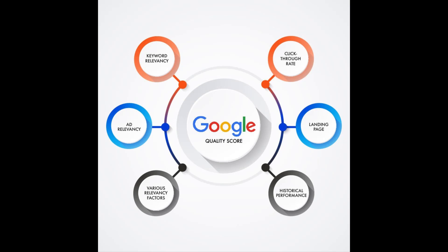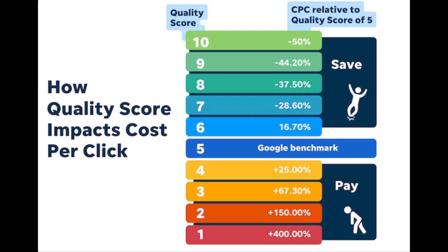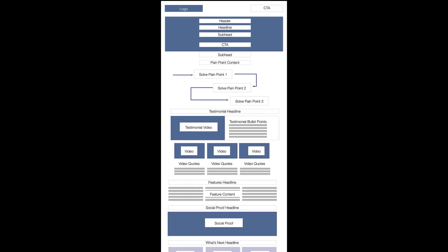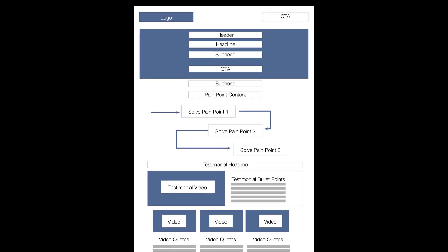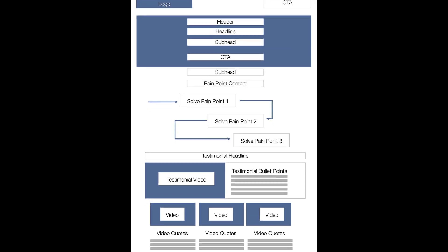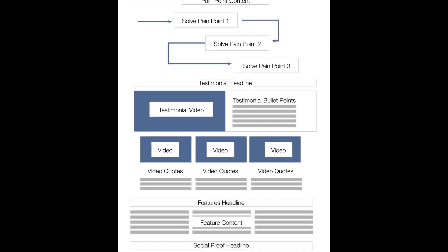Advertising platforms use a similar SEO algorithm to determine your quality score — an arbitrary score given to each page based on how it relates to the keyword. This helps platforms keep irrelevant information off certain searches, but it also allows them to artificially inflate the price of a click. The code structure for this type of page is similar to the SEO structure, with a few major differences.